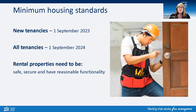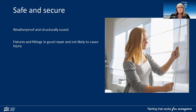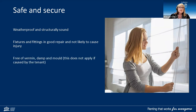Minimum housing standards started on 1 September for new tenancies — meaning new agreements, rooming agreements, or tenancy agreements signed from that date. For all tenancies, they commence from 1 September 2024. Rental properties need to be safe, secure, and have reasonable functionality. Safe and secure means: weatherproof and structurally sound — roofs and windows must prevent water entering, and floors, walls, roofs, decks and stairs must not be likely to collapse due to rot or defect. Fixtures and fittings must be in good repair including electrical items, and must not cause injury. The property must be free of vermin, dampness, and mould — however, this does not apply if the mould was caused by the tenant.